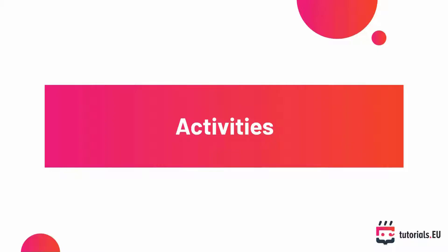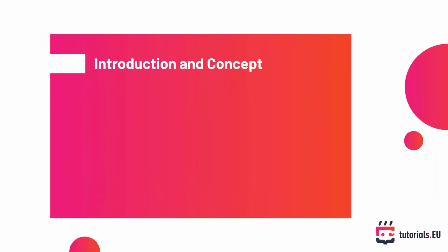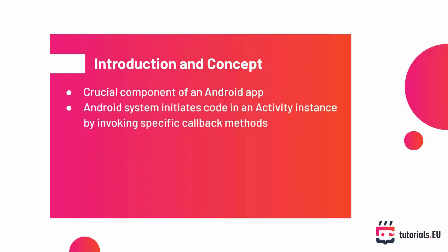In this video I would like to talk about a very important aspect of any Android application and that is activities. Activities are very important because basically every screen that you see is an activity in your Android app, at least most of the times. The Android system initiates code in an activity instance by invoking specific callback methods. If you've ever built an Android app before, you already have used those — one of them was, for example, the onCreate method. We will see other callback methods along the way as well.